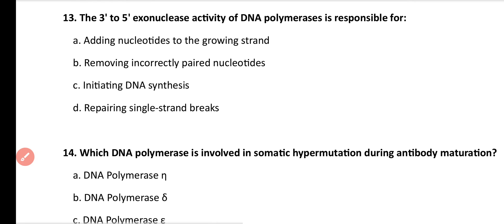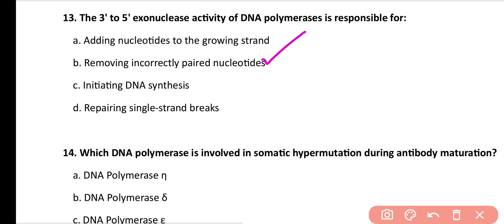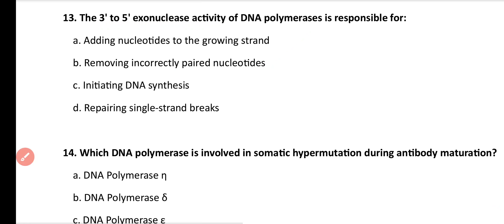Question number 13. The 3 to 5 exonuclease activity of DNA polymerases is responsible for: adding nucleotides to the growing strand, removing incorrectly paired nucleotides, initiating DNA synthesis, or repairing single strand breaks? Correct answer is option B. The 3 to 5 exonuclease activity of DNA polymerases performs proofreading, in which incorrectly paired nucleotides are removed.